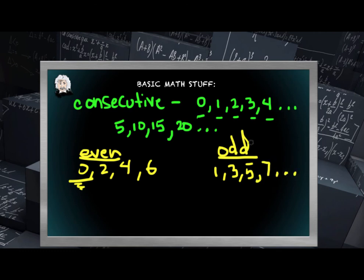So to continue with our idea of consecutive numbers above, consecutive odd whole numbers would be 1, 3, 5, 7, etc. in order consecutively.